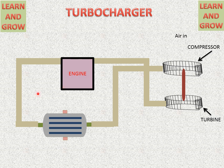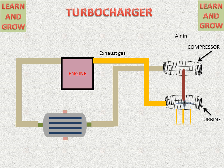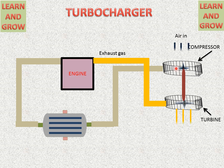The engine will start working and will give exhaust gases. These hot exhaust gases reach the turbine and strike on the impeller of the turbine. The impeller of the turbine starts rotating, because the shaft is connected to both the turbine and the compressor. So if the turbine impeller rotates, then the compressor impeller will also rotate, and it will suck air from the atmosphere. Exhaust gases will exit, and air will be sucked from the atmosphere into the compressor section.